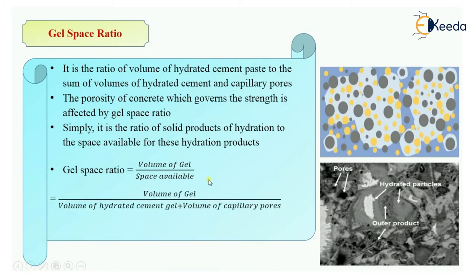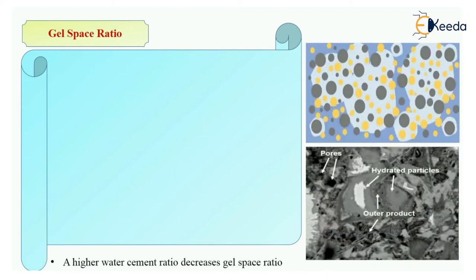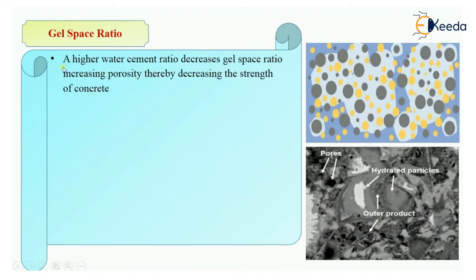So the formula of gel space ratio is: Volume of gel divided by space available, where space available = volume of hydrated cement gel + volume of capillary pores. It is noted that a higher water-cement ratio will decrease the gel space ratio.